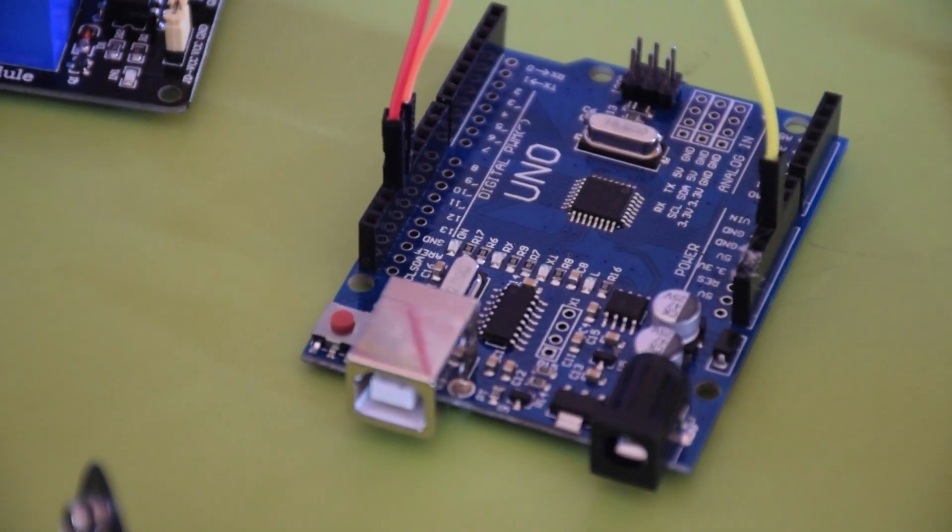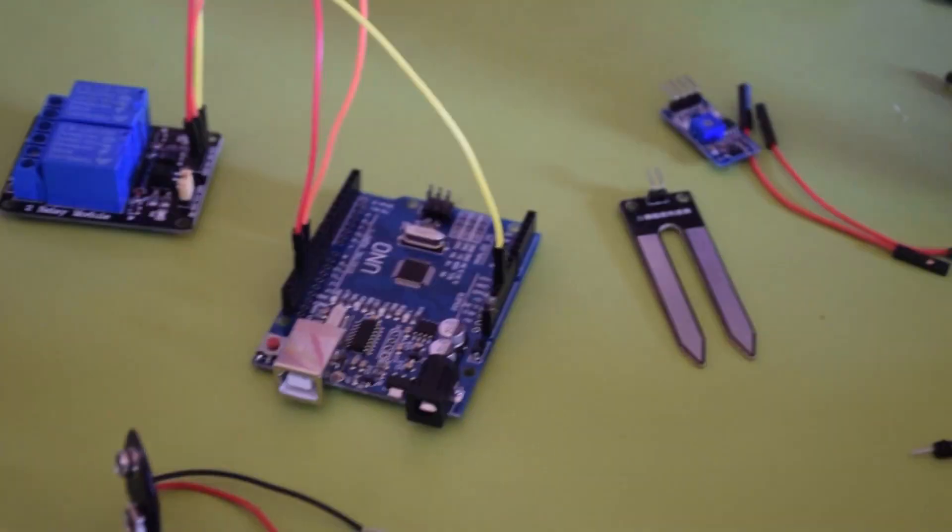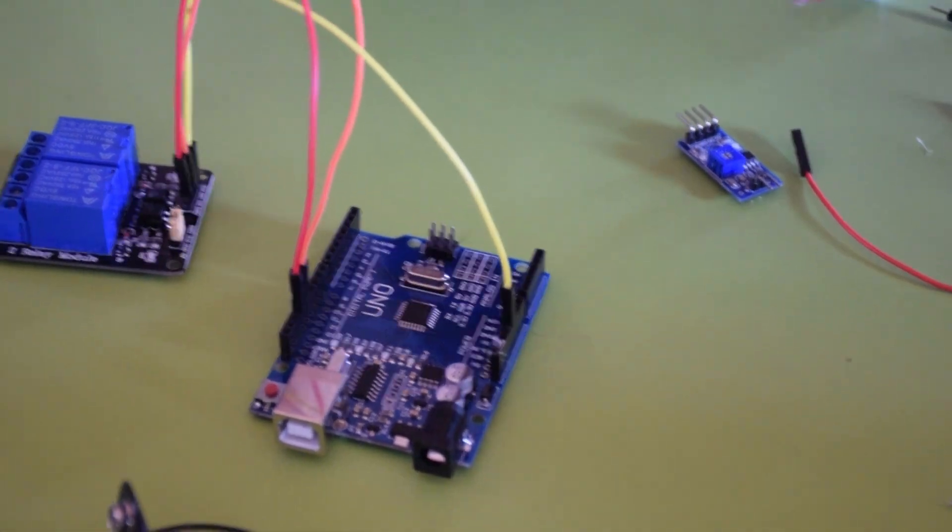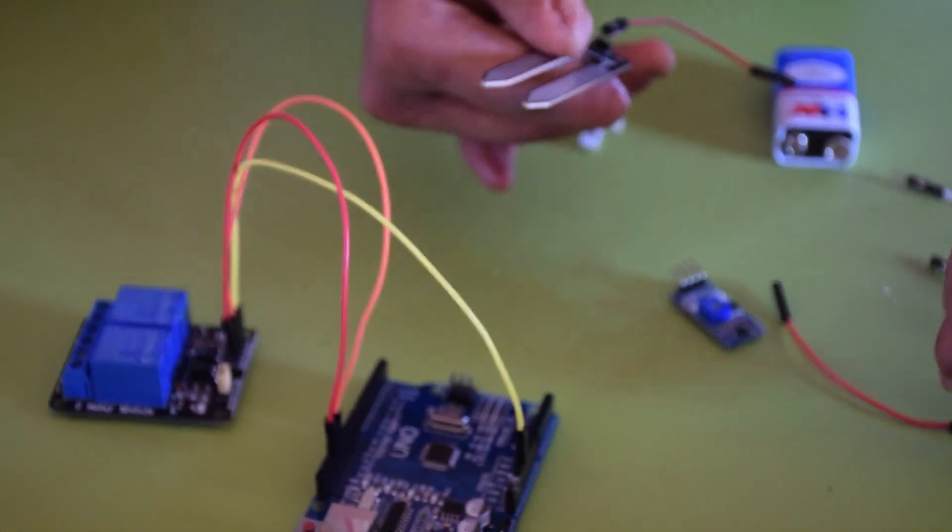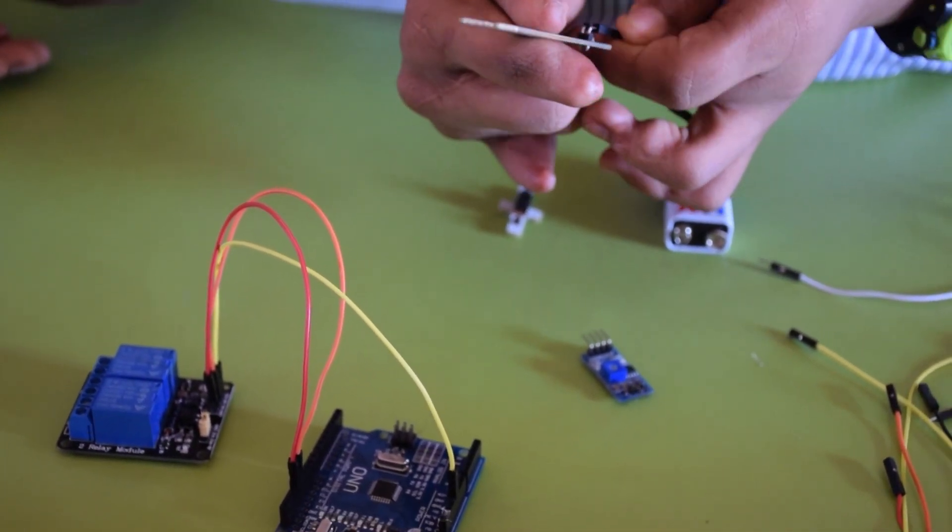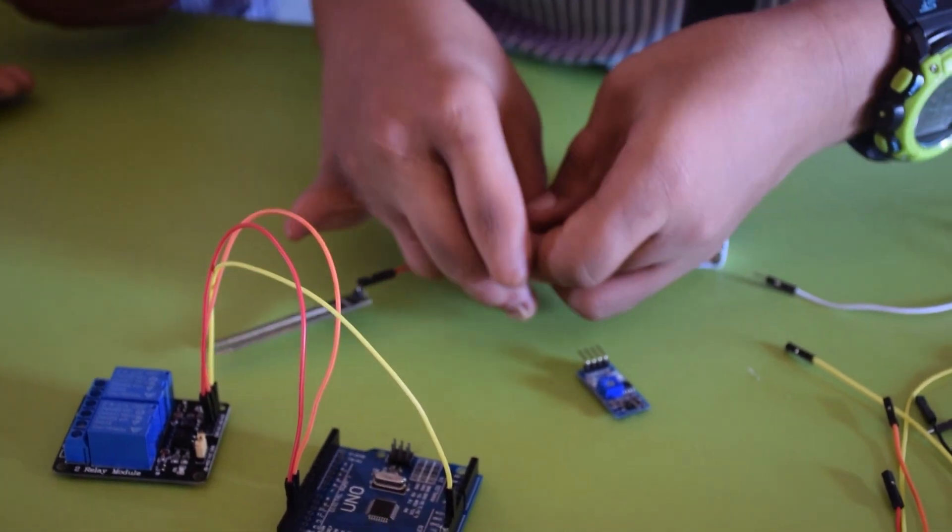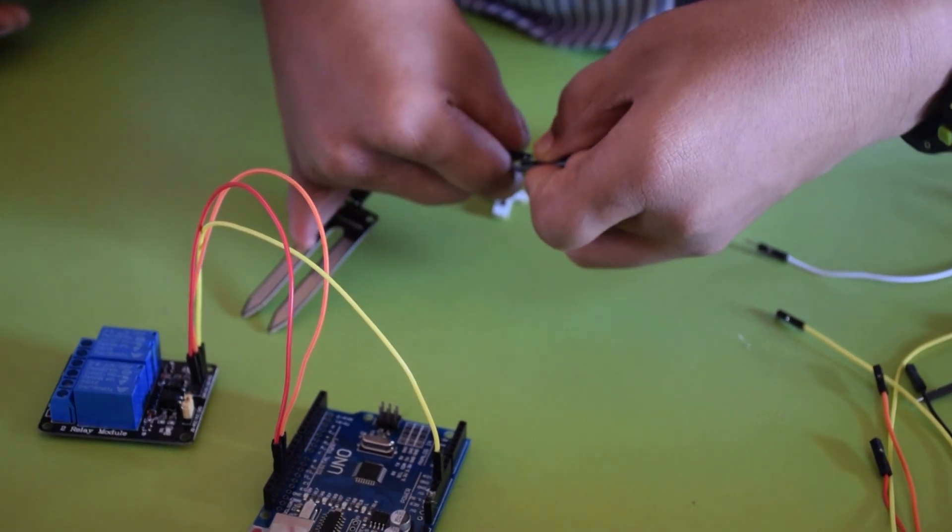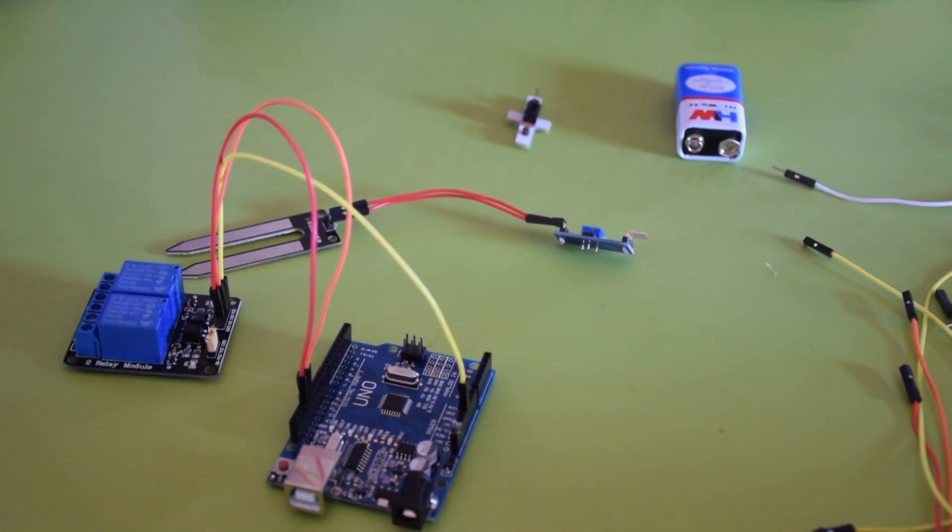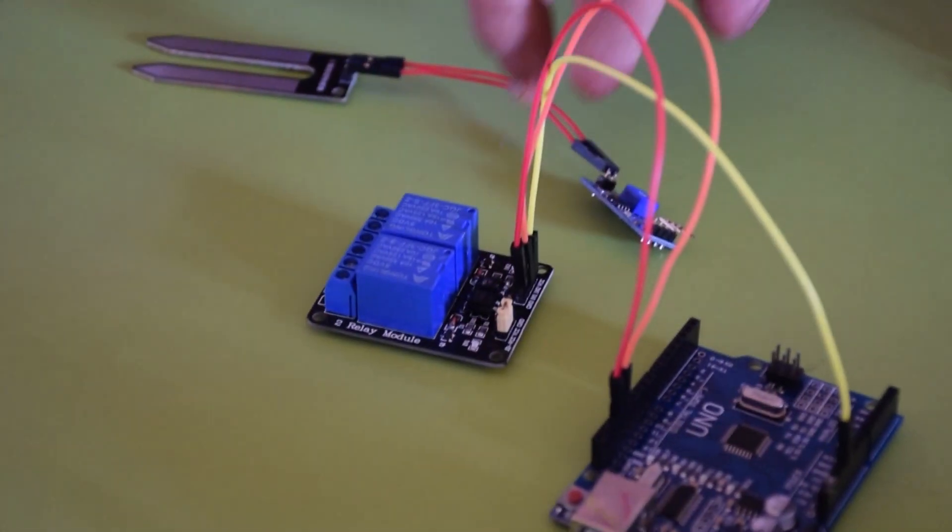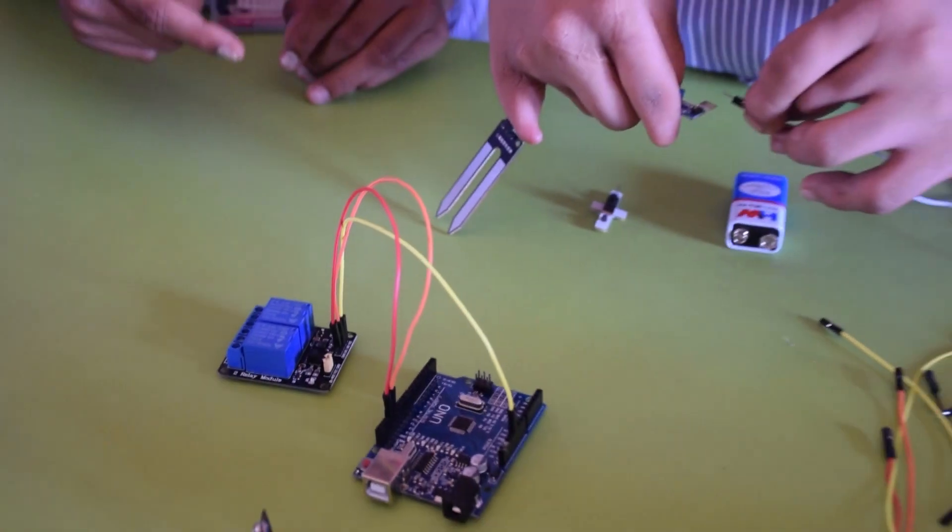Next, we connect the Moisture Sensor to the Arduino. For that, we have to connect the Moisture Sensor with the controller. Again, there are 4 ports in the controller. First, we connect the VCC port to the 5 volt in the Arduino.